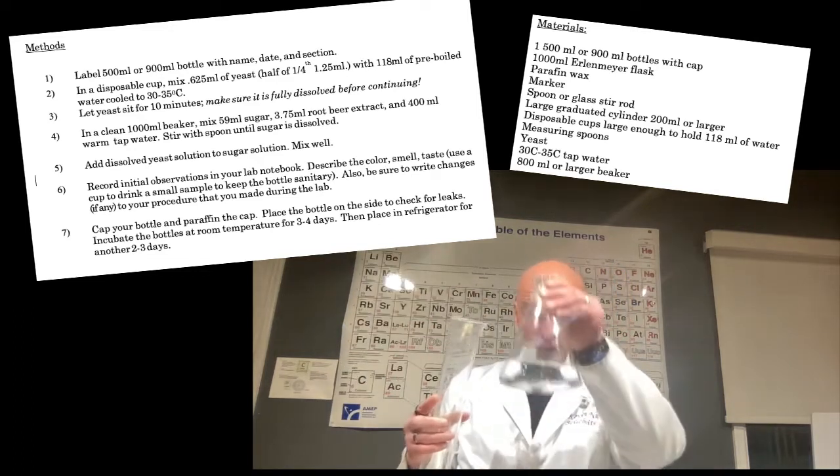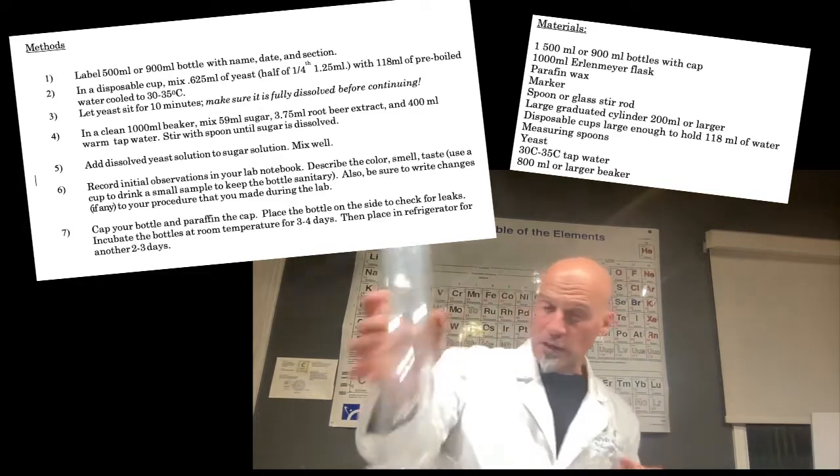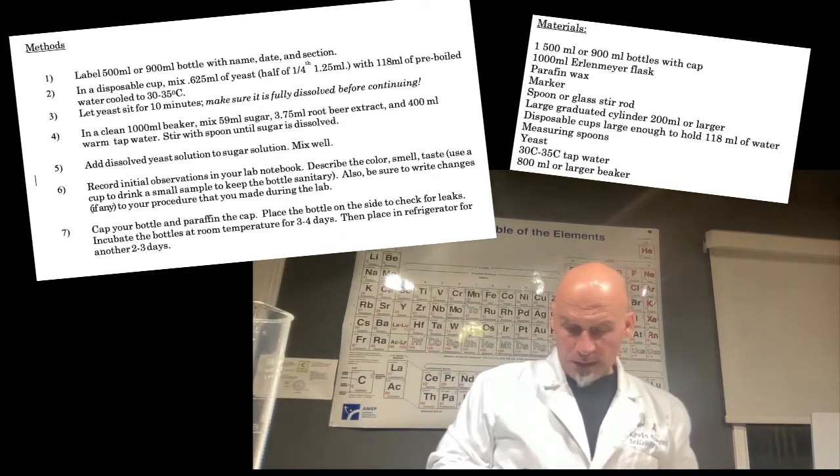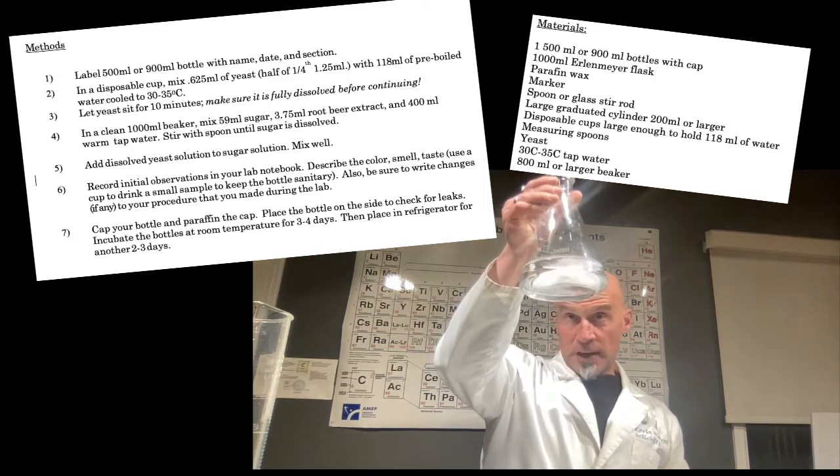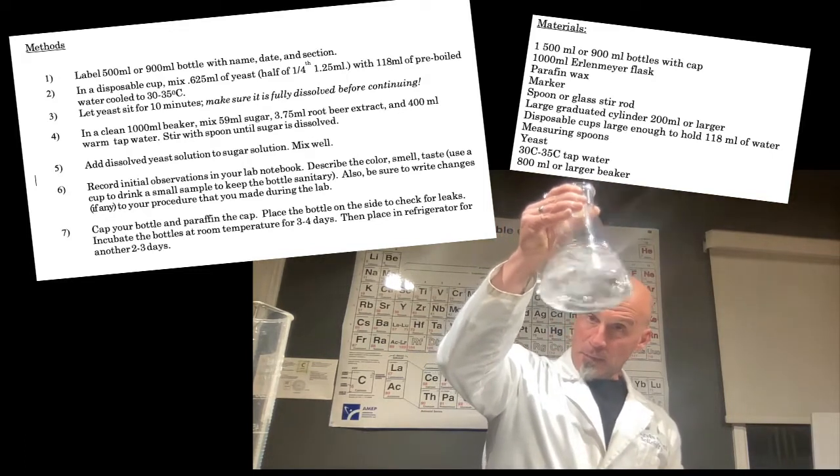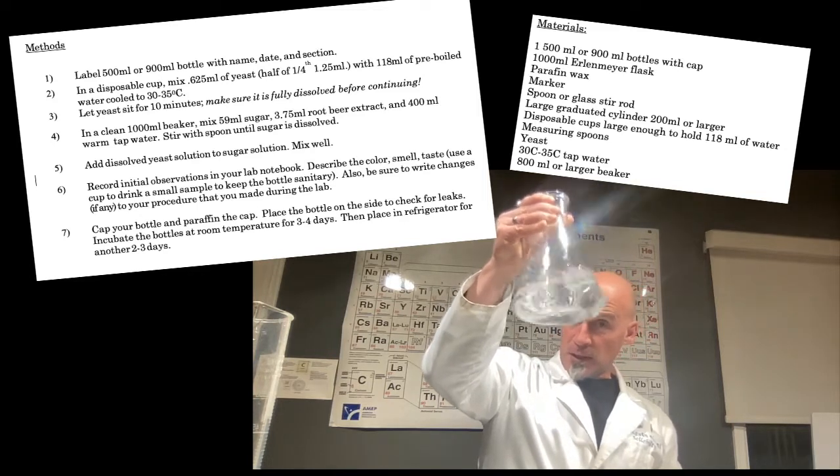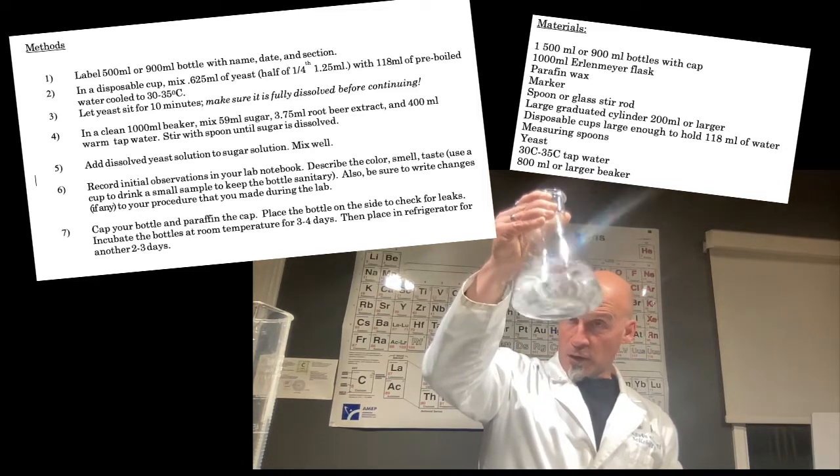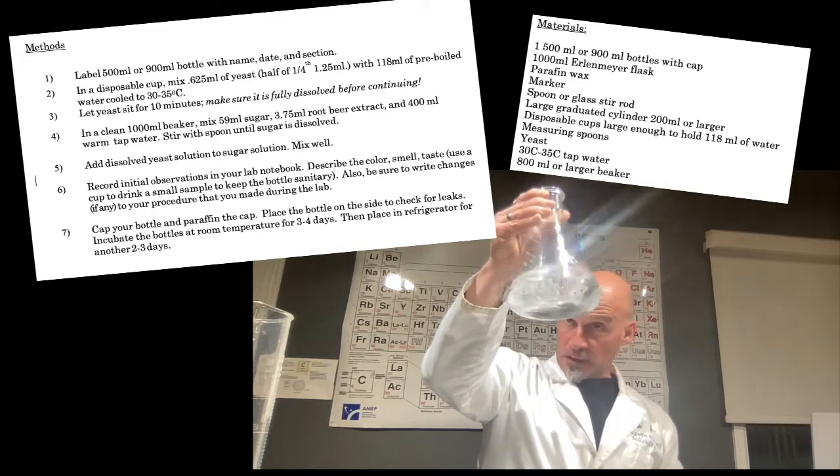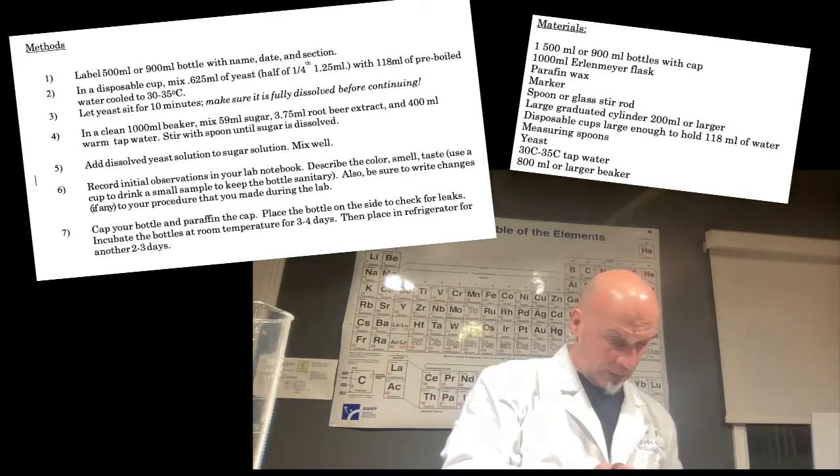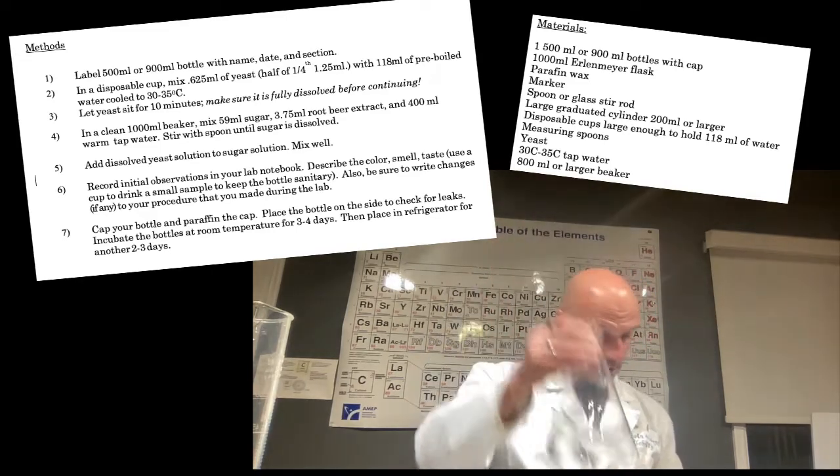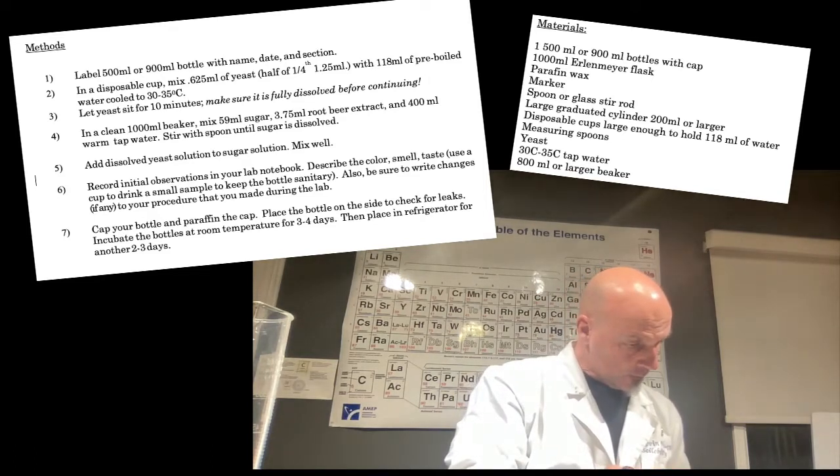And again, you want this actually on the table, just doing that for demonstration. Alright, so now, I've got my sugar, and I've got my root beer extract, and I've got my water. So, you want to make sure and mix that up. You can either agitate it like that, or again, go ahead and use a glass stir rod if you need. Give it a couple shakes like that, and make sure the sugar dissolves, making the solution.